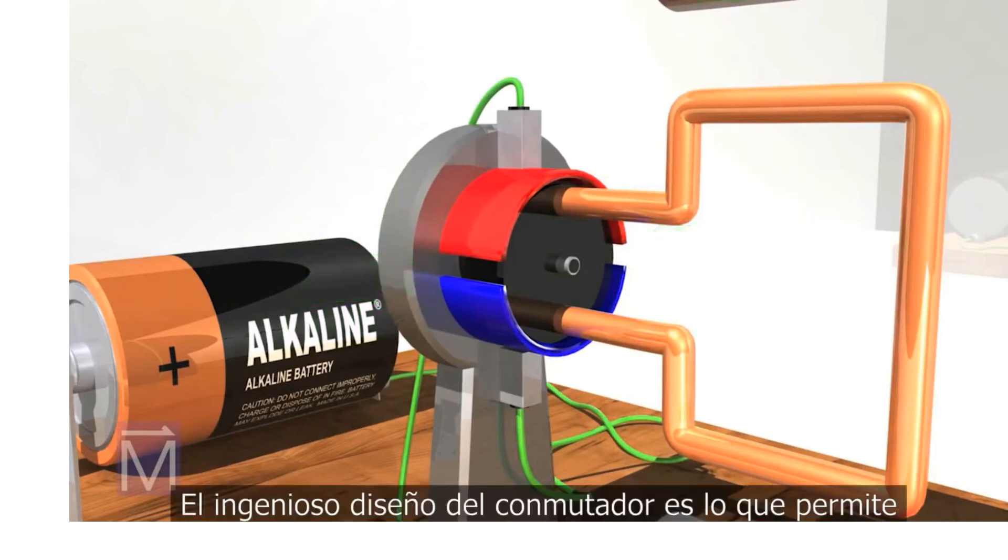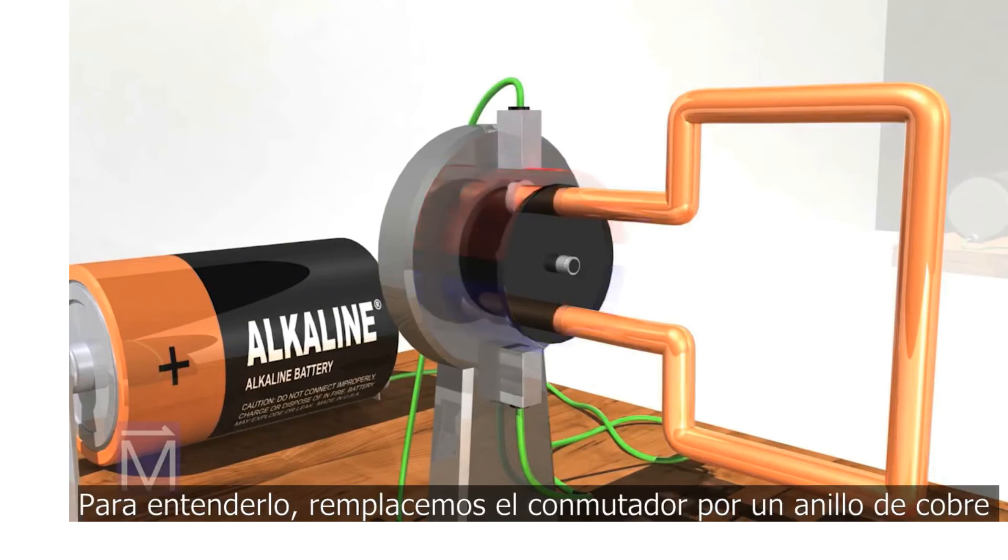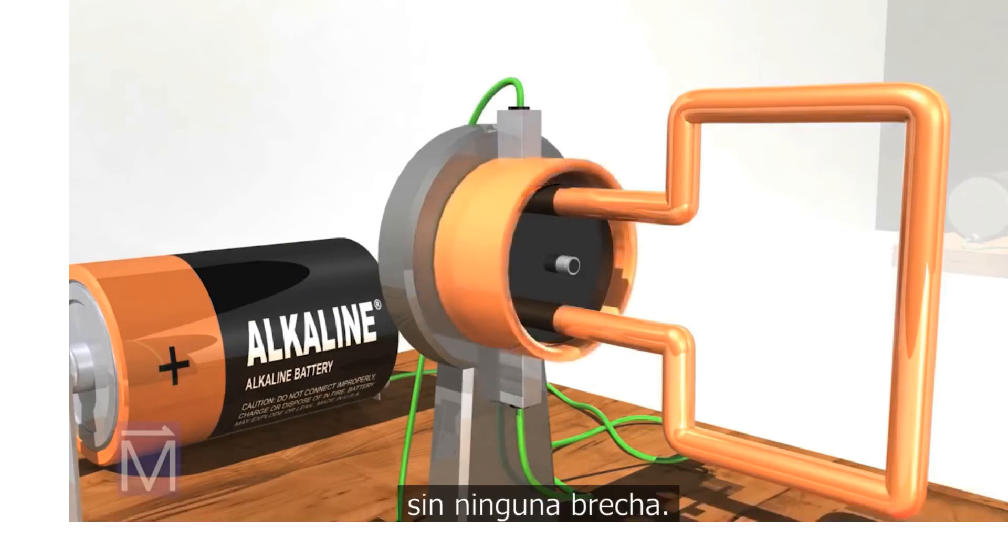The cleverly designed commutator is key to making the DC motor work. To see why, we'll temporarily replace it with this copper ring, which has no gaps.